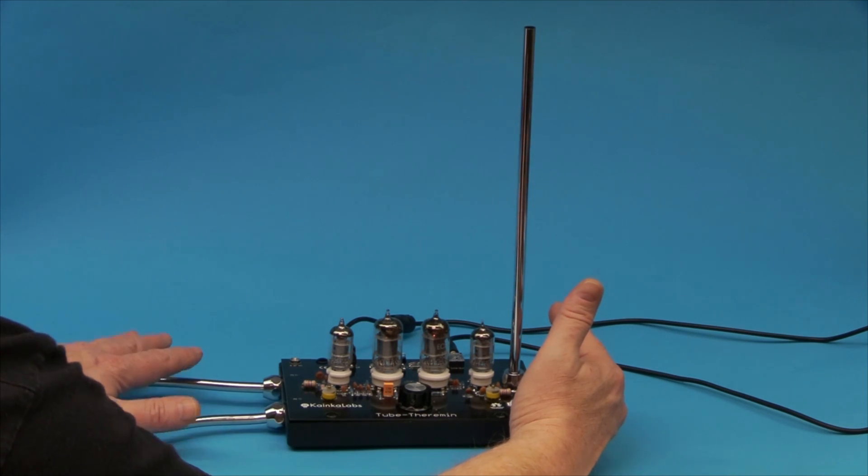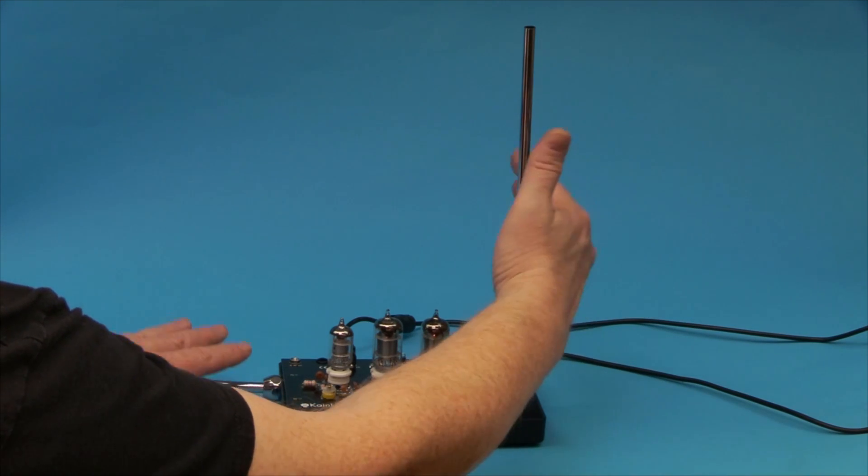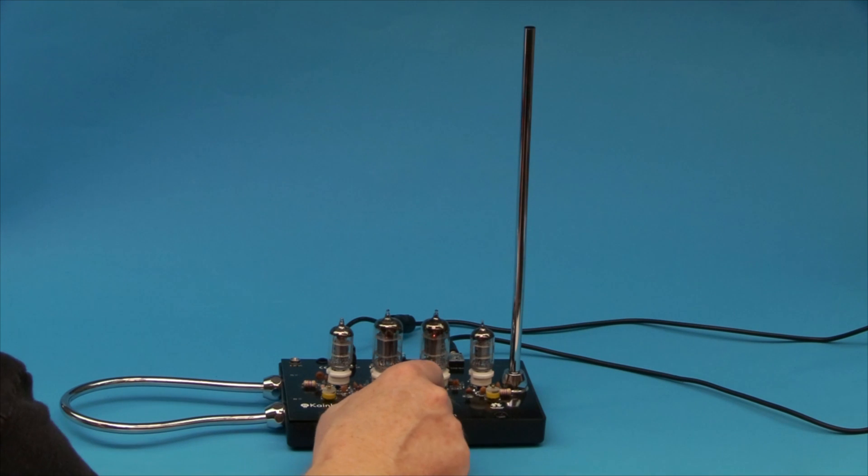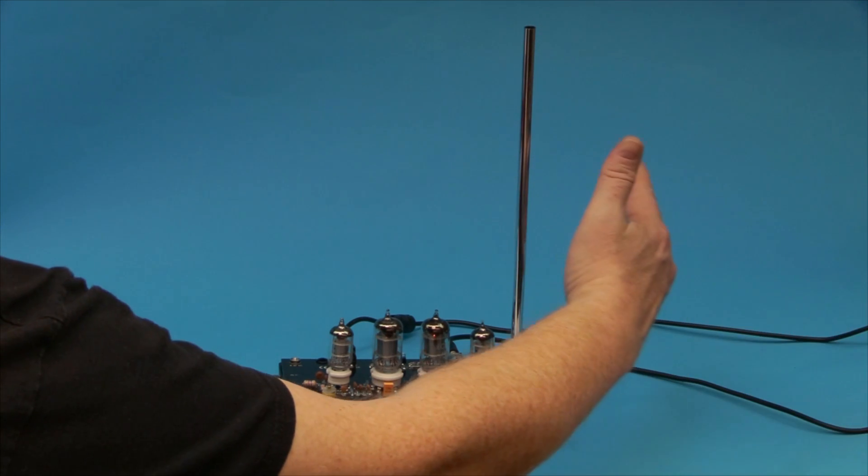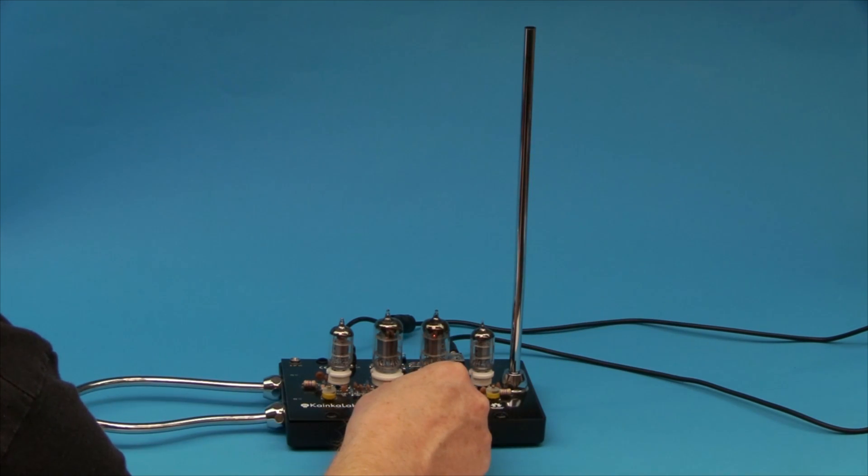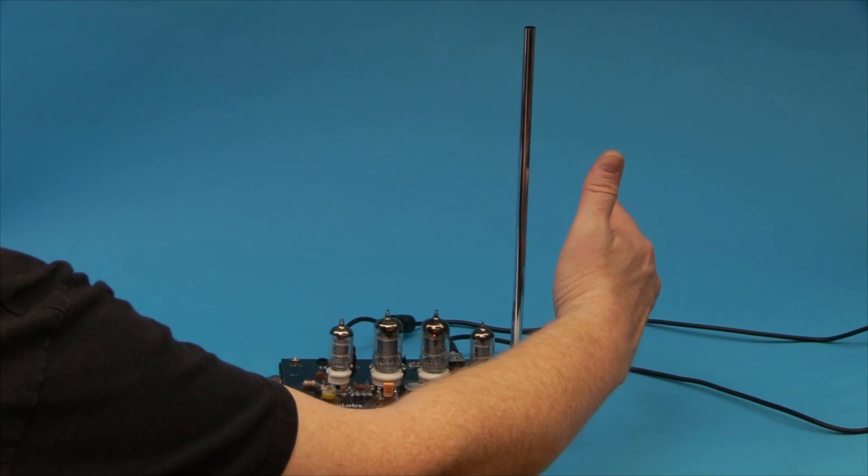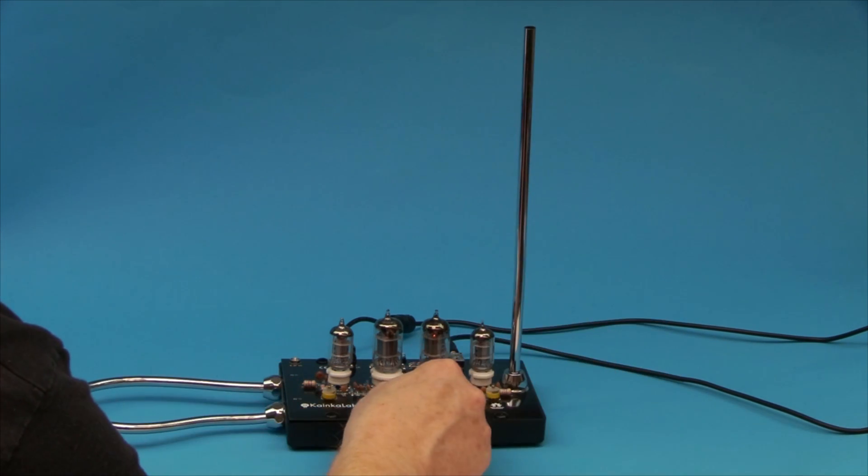And so, with both of your hands, you're controlling volume and pitch. And you can also play around with the zeroing variable capacitor here. For example, if you set it that with no hand you already have a tone, then you have this effect, and if you set it in the other direction, then the tone becomes first of all lower, and then higher again. You can extend this effect a little bit more.